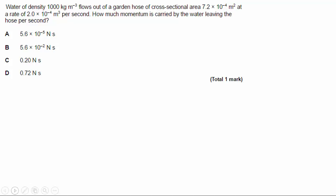So pause the video and read the question if you haven't already. So here we go. We've got water of density 1,000 kilograms per meter cubed. Yeah, that's correct. Sorry, density is kilograms per meter cubed. Flows out of a garden hose with a cross-sectional area of 7.2 times 10 to the minus 4 meters squared at a rate of 2 times 10 to the minus 4 meters cubed per second. How much momentum is carried by the water leaving the hose per second?